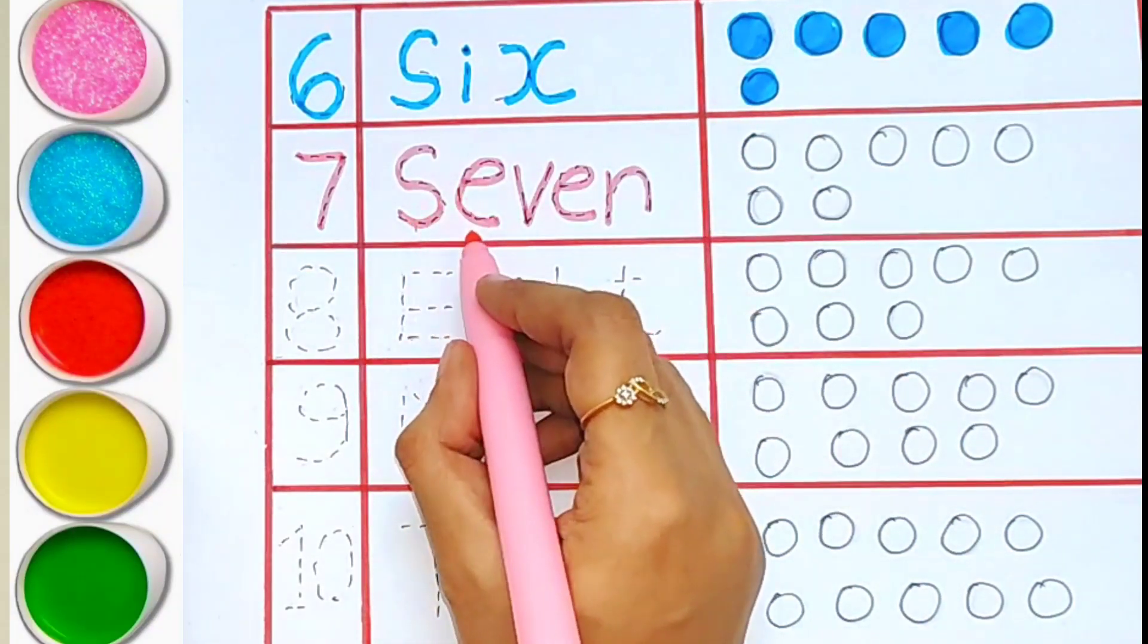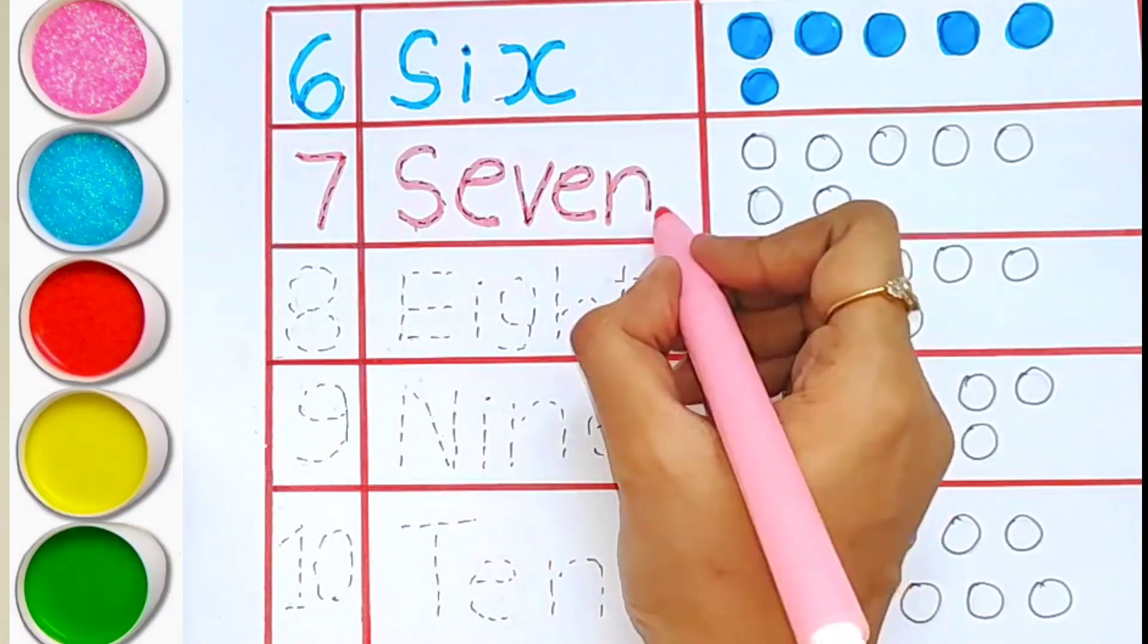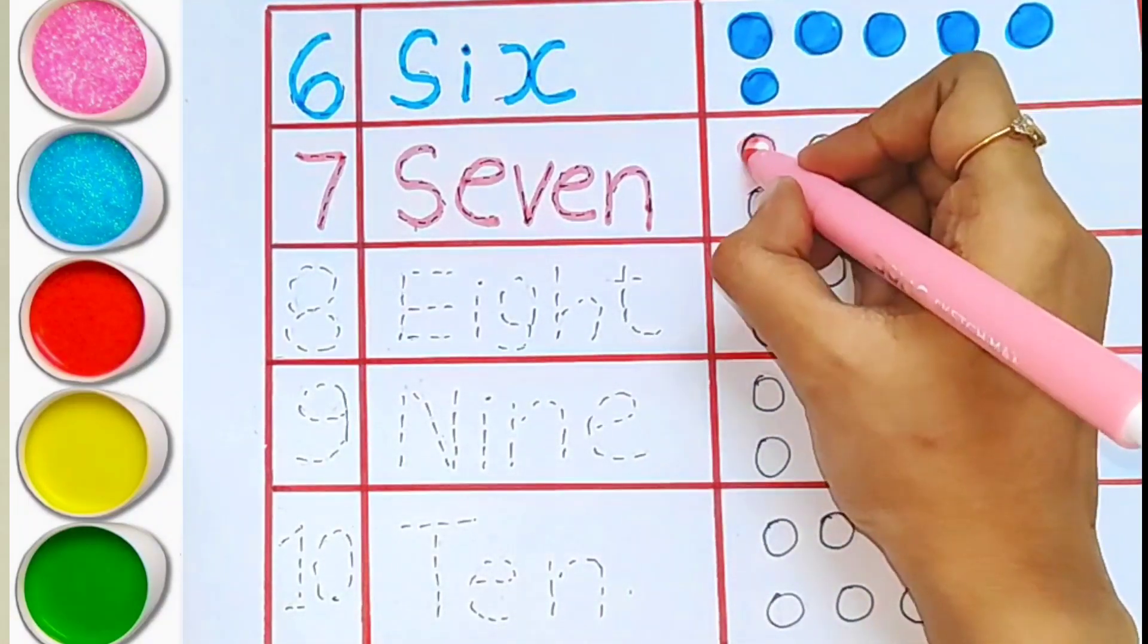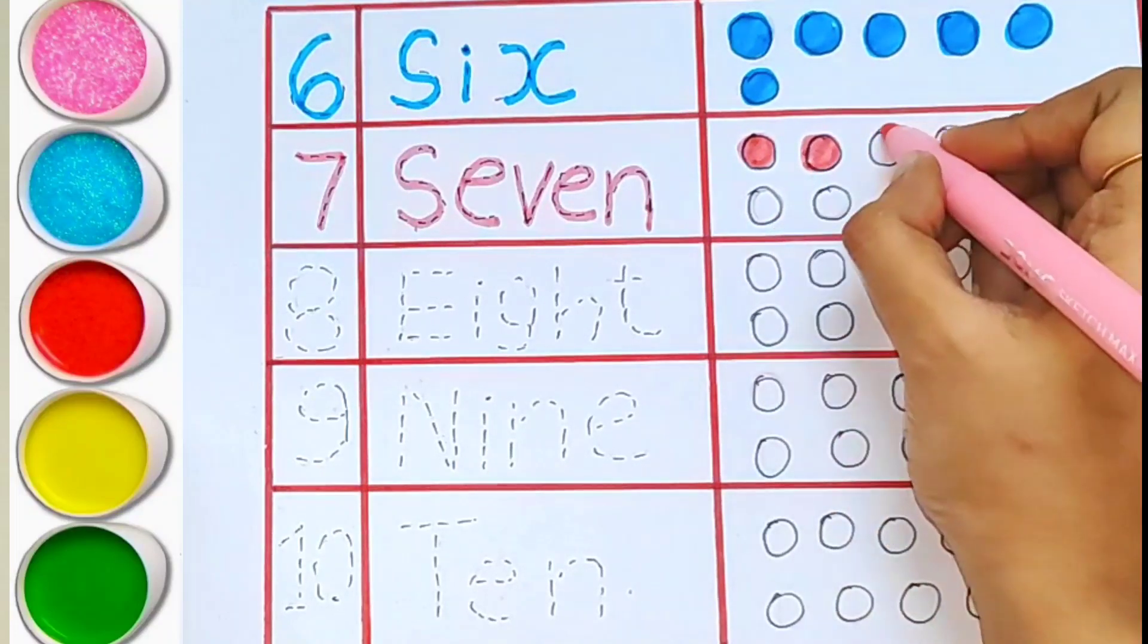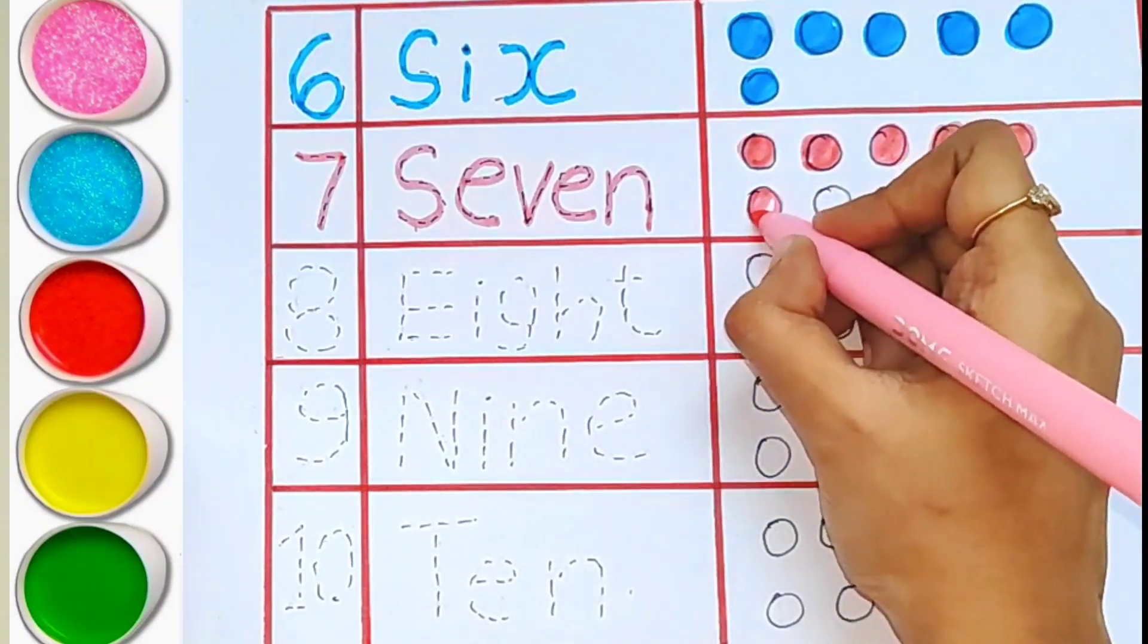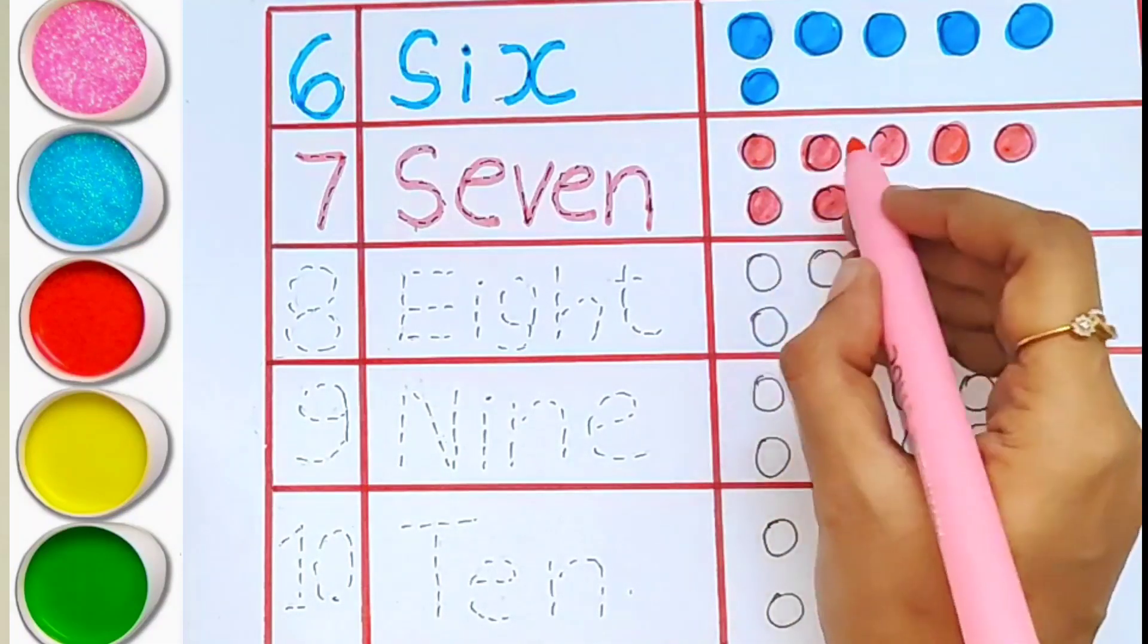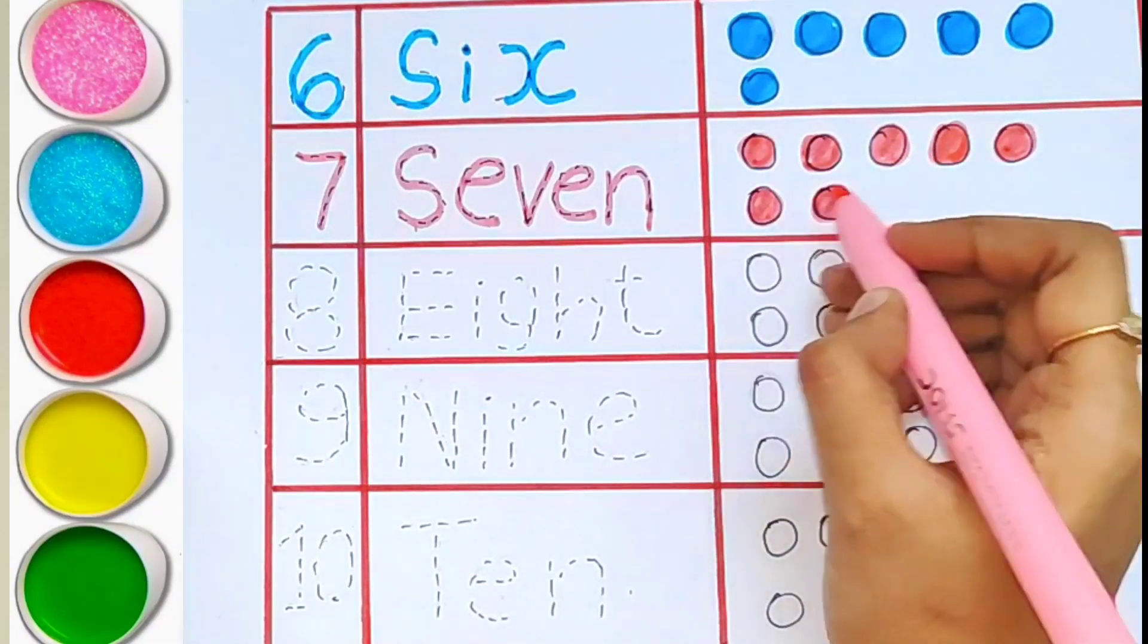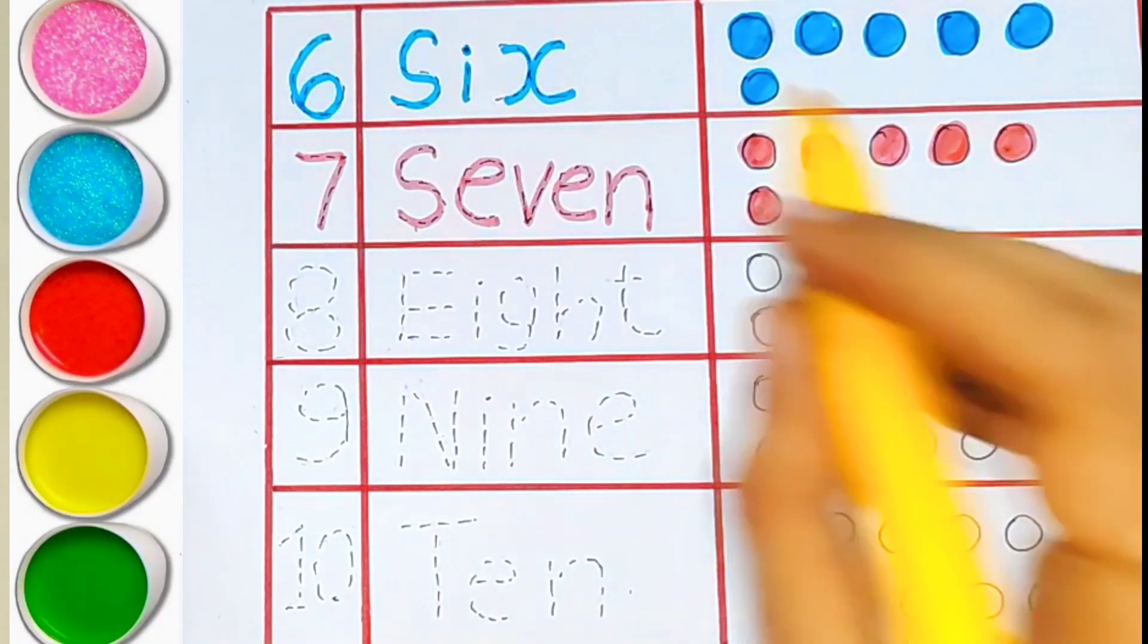S-E-V-E-N. Seven. One, two, three, four, five, six, seven. Seven balls. Eight.